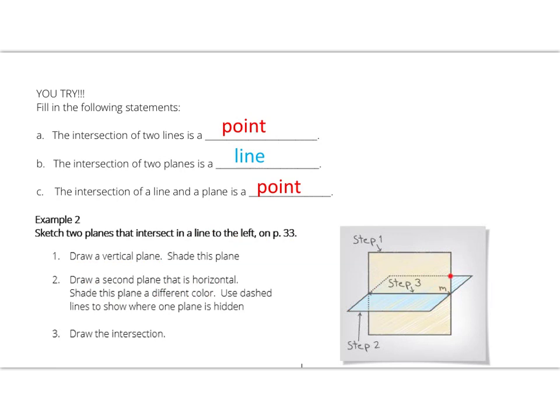When you get to this part right here, we have to pretend like we can't see the rest of the parallelogram that represents the plane, so that's why it's dashed. You would still sketch it in the shape of a parallelogram in a different color. Your final step is to draw the intersection, which is a line, so highlight line M in a different color.